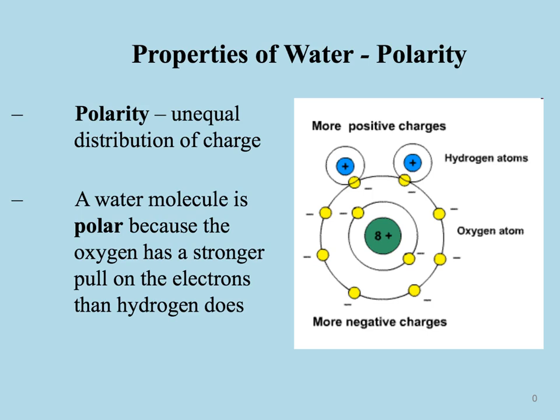Oxygen is a much bigger molecule and it also has six electrons already, so it's going to have a stronger pull on the electron it shares with hydrogen. Hydrogen, being much smaller with only one proton, is not going to have a strong pull on that electron. So the oxygen side of the water molecule is going to become negatively charged, and the hydrogens are going to become positively charged.